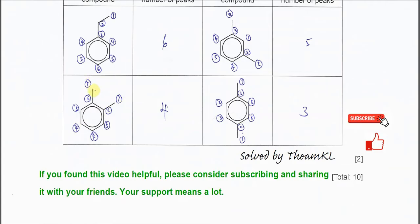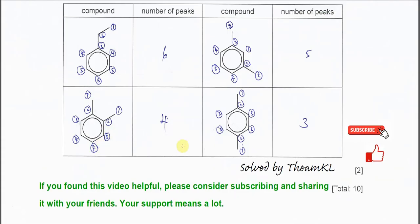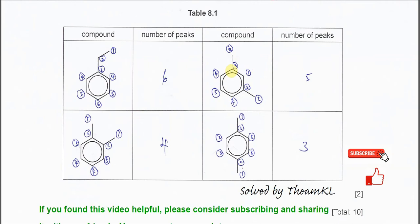For the next compound, these carbons are equivalent, so: one signal, two, three, four — it produces four peaks or four signals. For the following compound, starting from here: one, two — these two are equivalent because of symmetry, so three, four, five — giving five peaks or five signals.